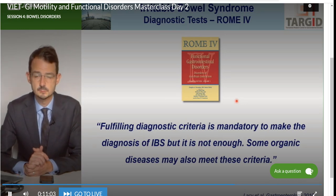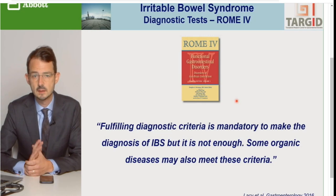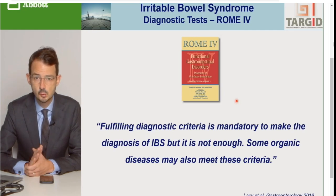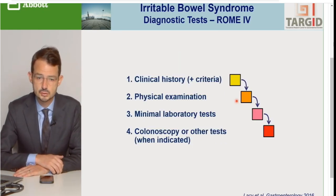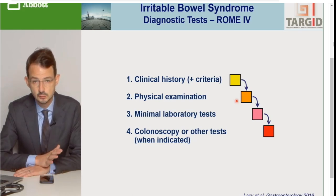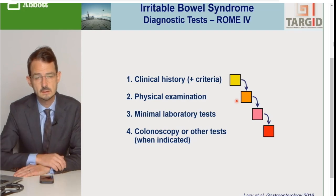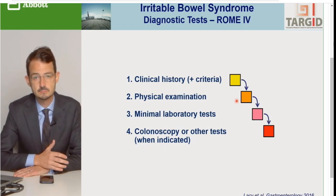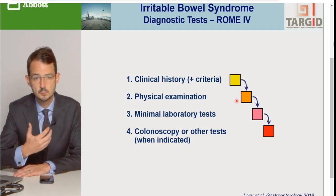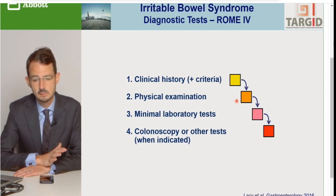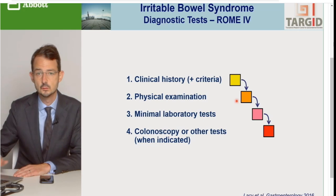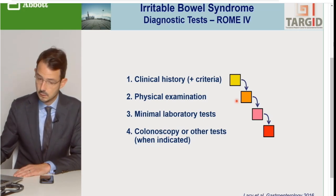Tiêu chuẩn Rome 4 là rất có lợi và hữu ích. Tuy nhiên, chúng ta cần phải cẩn thận bởi vì những bệnh lý thực thể, thí dụ như bệnh lý ruột viêm hoặc là ung thư ruột, cũng có thể phù hợp với tiêu chuẩn Rome 4. Do đó chúng ta cần loại trừ những bệnh lý thực thể đó. Đó là lý do tại sao mà Rome đề nghị là chúng ta phải đi từng bước: đầu tiên hỏi về bệnh sử lâm sàng, phối hợp với những tiêu chí vừa kể, rồi khám thực thể, chỉ định cận lâm sàng, và một số bệnh nhân thì đi tới soi đại tràng.